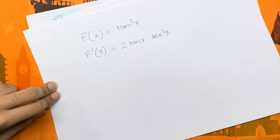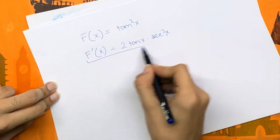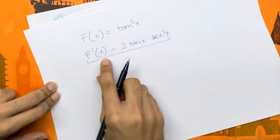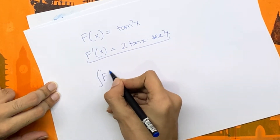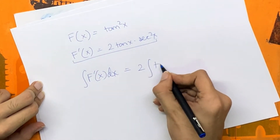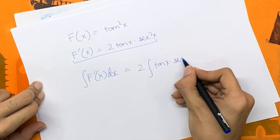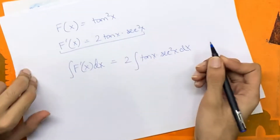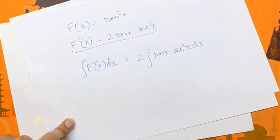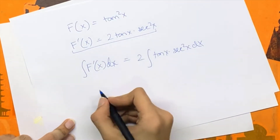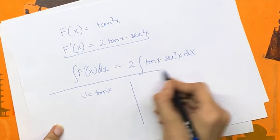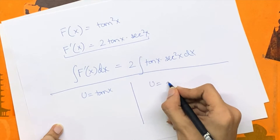Let's look at why that's the case. We have to find the integral of f'(x), which gives us the integral of 2·tan(x)·sec²(x) dx. There are two ways of solving this integral. In the first method we substitute u = tan(x), and in the second method u = sec²(x).